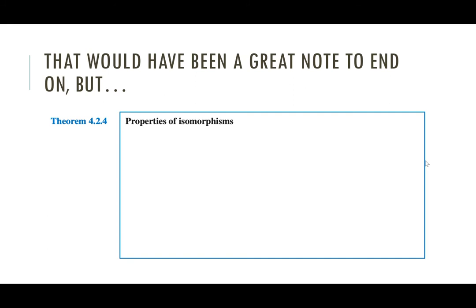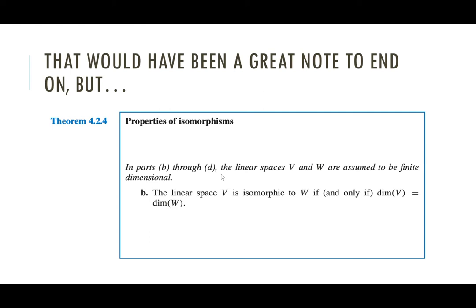That would have been a great note to end on, but I'm going to finish by talking about some properties of isomorphisms. I'll start with the last few properties, because they deal with just finite dimensional spaces — which is 99% of what we're going to talk about in this class. In parts B through D, we're assuming that the linear spaces V and W are finite dimensional. The first property: V is isomorphic to W if and only if they have the same dimension.